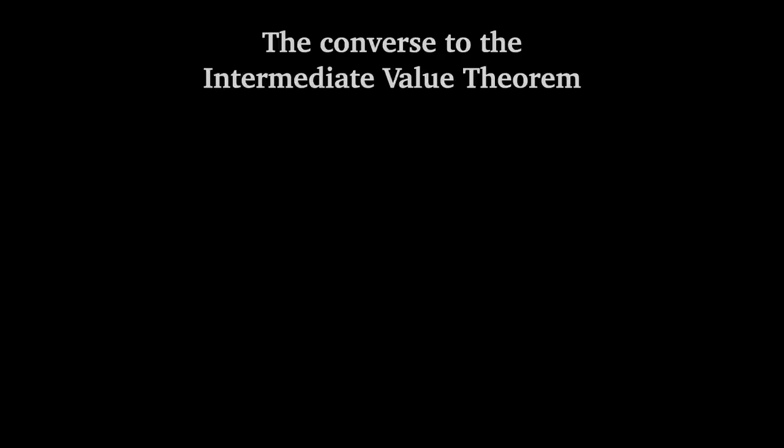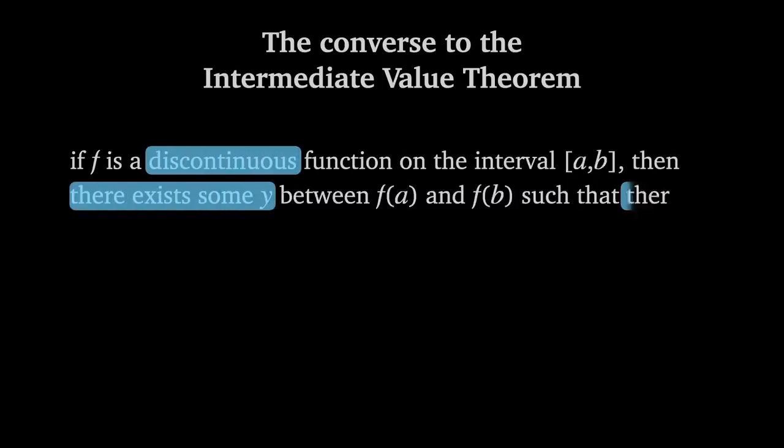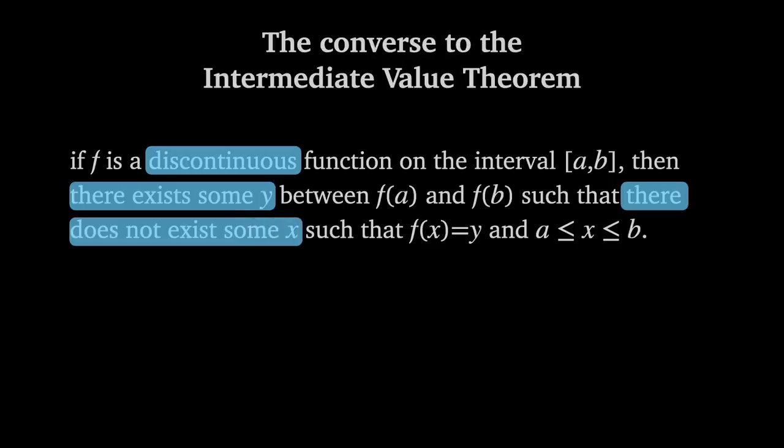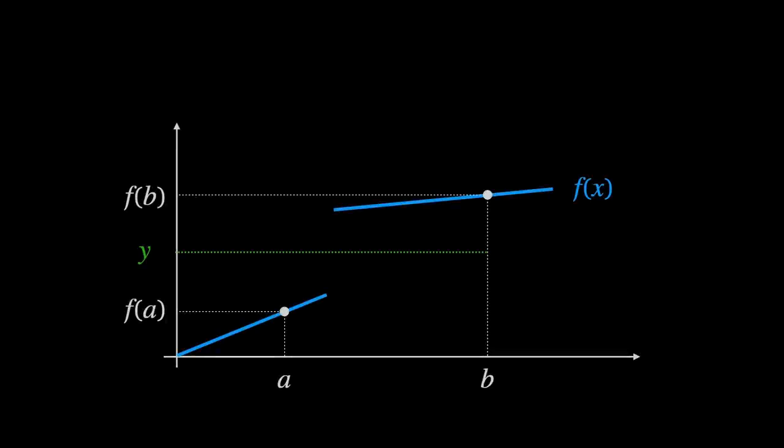The converse, or opposite, of the Intermediate Value Theorem would say that if f is a discontinuous function on the interval A to B, then there exists some Y between f(A) and f(B) such that there does not exist some X such that f(X) is equal to Y and X is between A and B. That is, this will always happen with discontinuous functions.